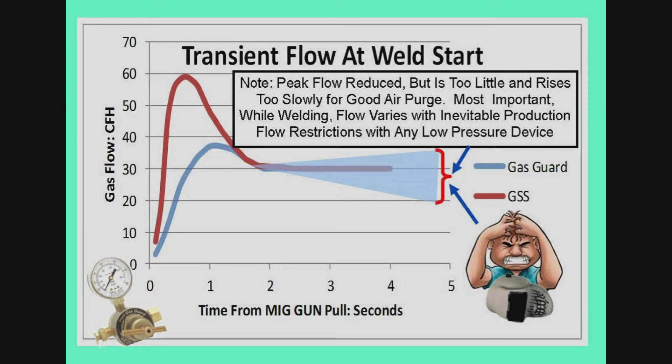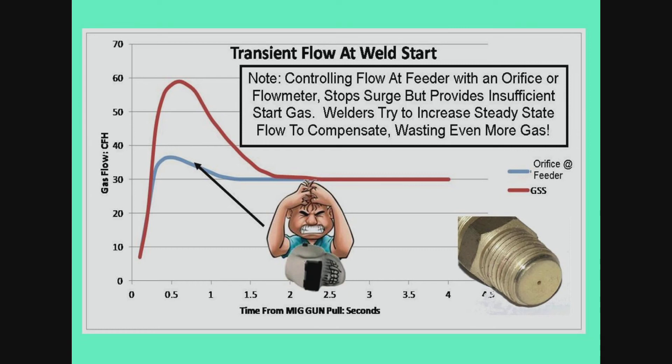Flows vary significantly when welding while the flow-calibrated pressure gauge gives a false impression that gas flow is consistent. Mounting a simple orifice at the feeder side to control welding gas flow eliminates surge but does not provide sufficient extra gas at each weld start to purge air — it's like starting the weld in air. Welders rightfully see the problem and try to compensate by increasing the steady-state flow rate, which only partially helps and wastes the gas that's trying to be saved.